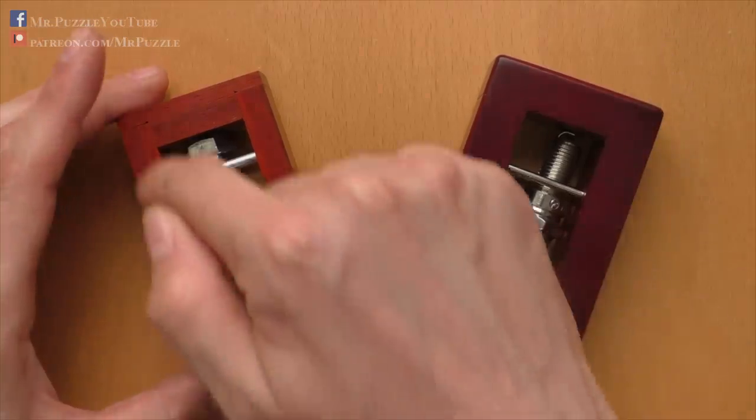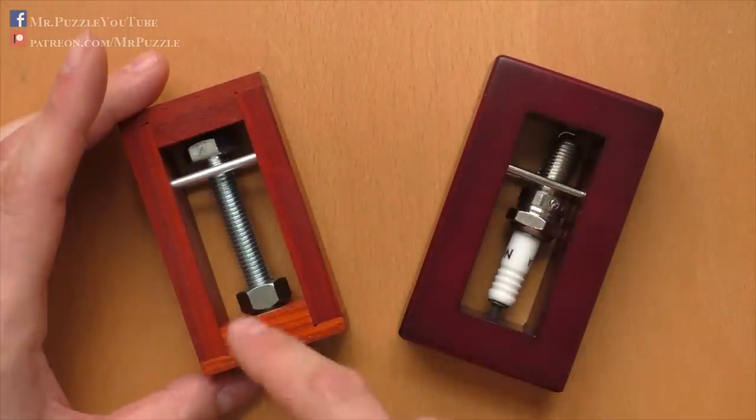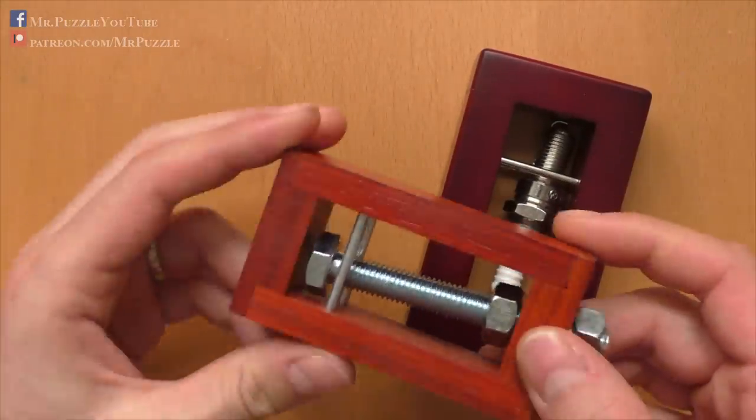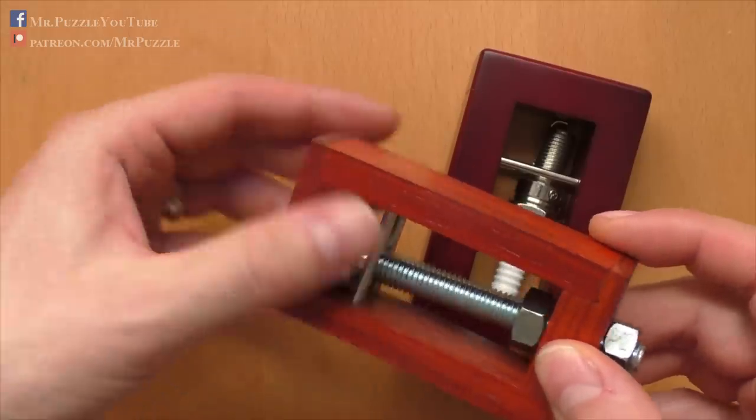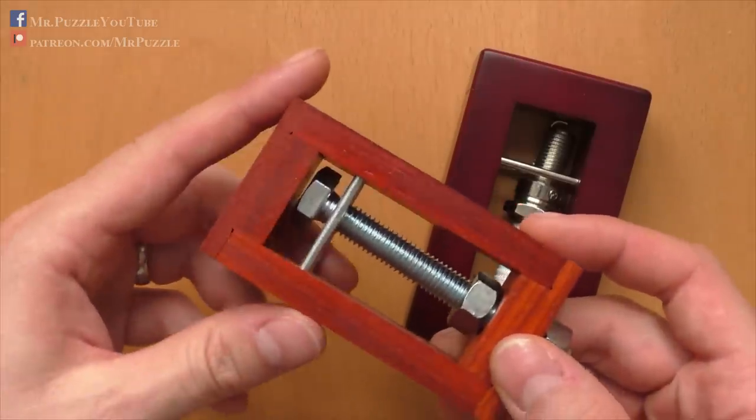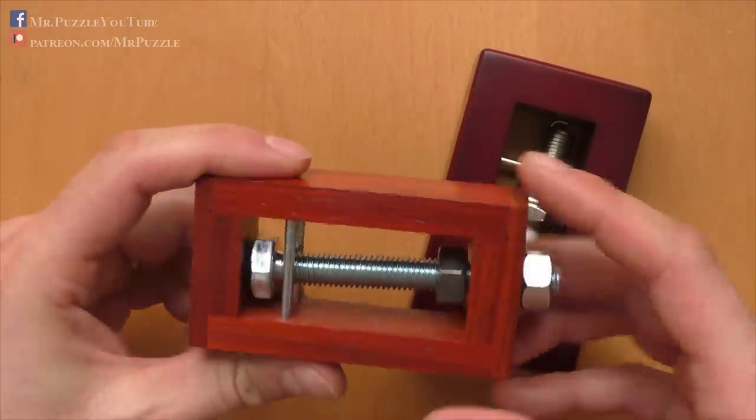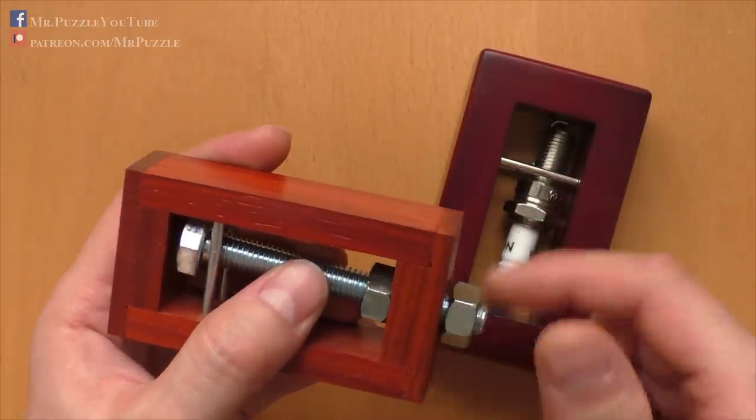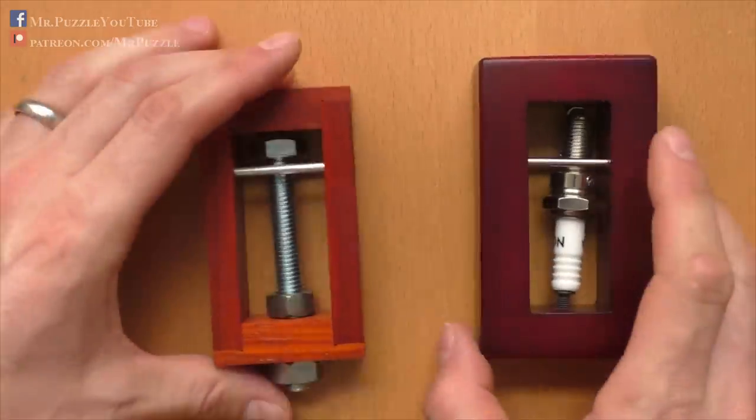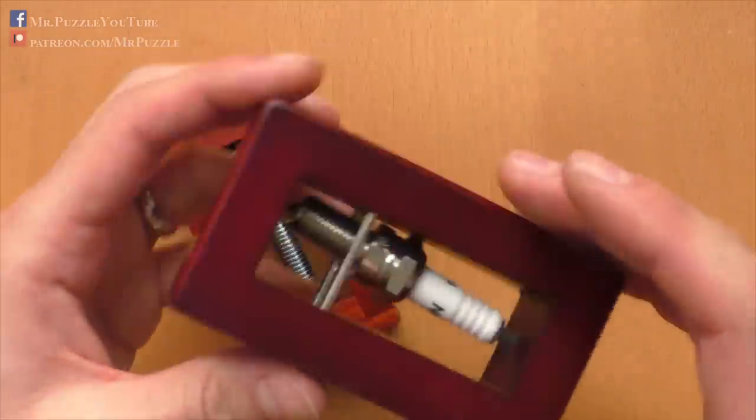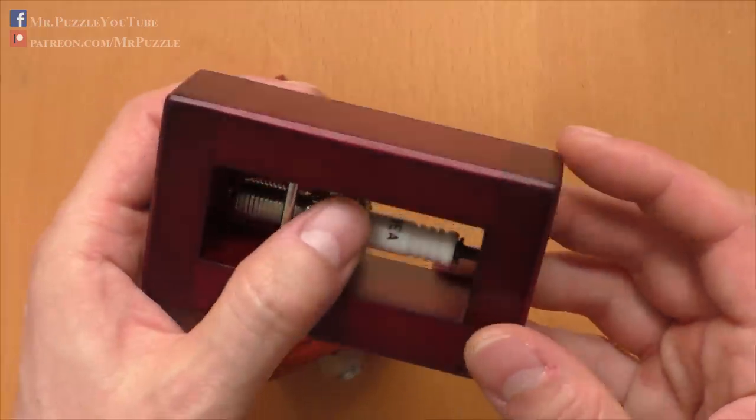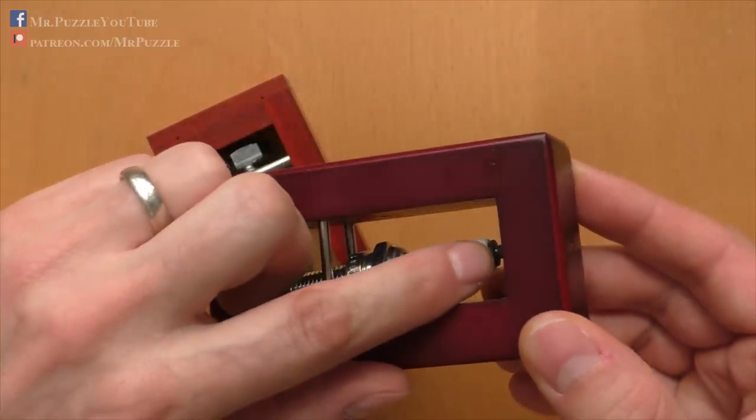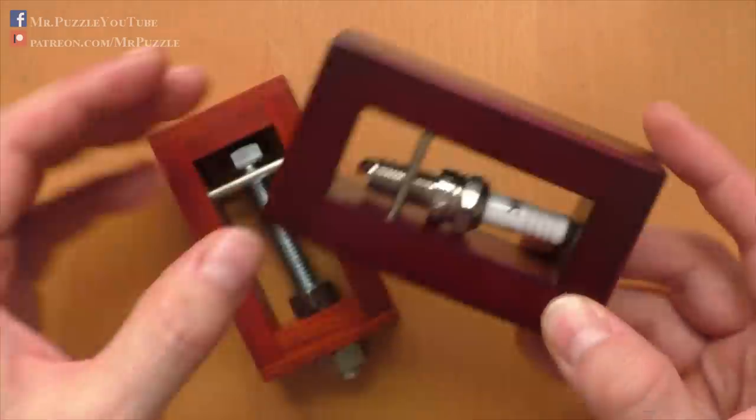Both puzzles consist of a wooden frame and of some object that is trapped inside. Both are equipped with these two pins that keep the object in position. On this one, we have a bolt with two nuts that can be unscrewed. On the other one, which is my personal favorite, we have a spark plug, which is held in position by this small thread here on the bottom. So you cannot get it out.